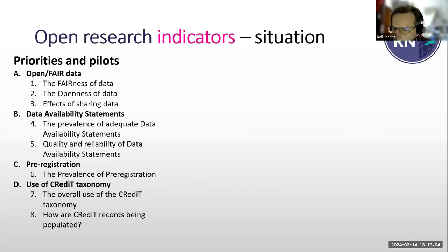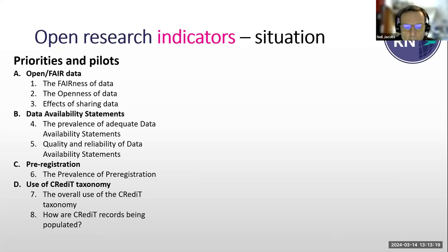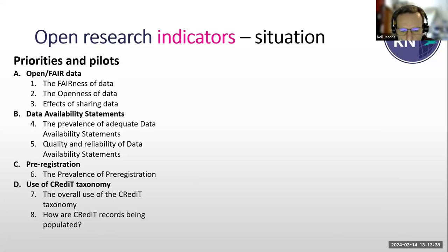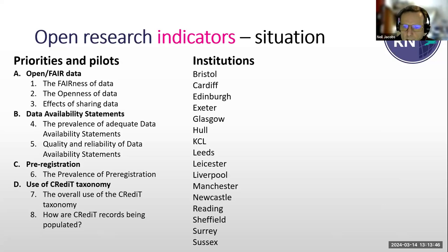We have seven or eight pilots — we're still talking about how to count them, and some may merge together. They are focused on: open and FAIR data, the openness and fairness of data and the effects downstream of sharing data; data availability statements — both their prevalence and quality/reliability; the prevalence of pre-registration; and the use of the CRediT taxonomy. This is the group of institutions across the United Kingdom who are interested — a pretty broad range, which I'm delighted about.